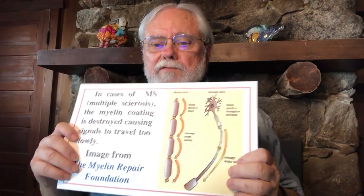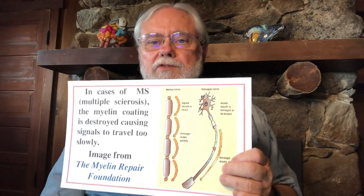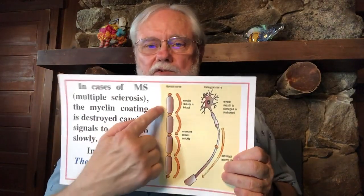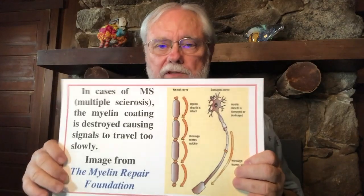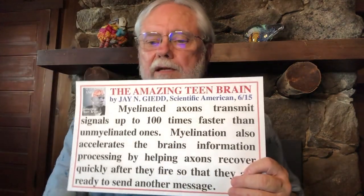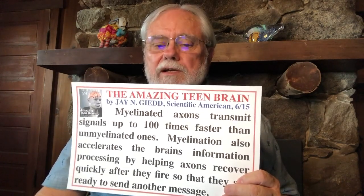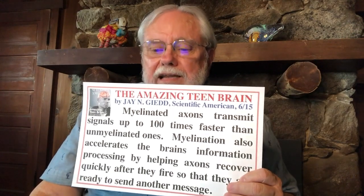Here's a picture of what happens with multiple sclerosis — the myelin has been largely destroyed, leaving very unhealthy myelin versus a healthy, well-wrapped circuit. According to Scientific American in 2015, myelinated axons transmit signals up to 100 times faster than unmyelinated ones. Myelination also accelerates the brain's information processing by helping axons recover quickly after they fire so they're ready to send another signal.